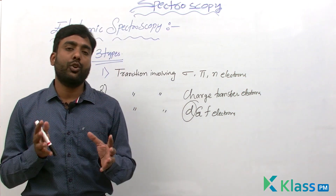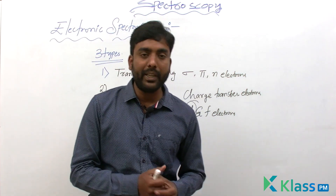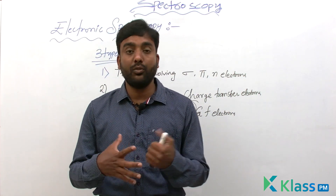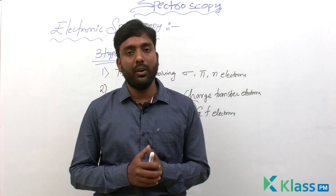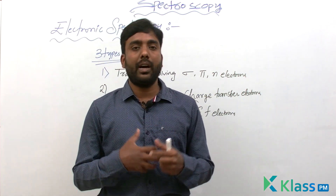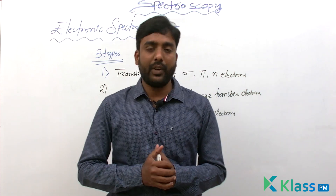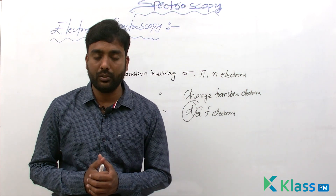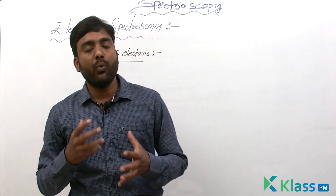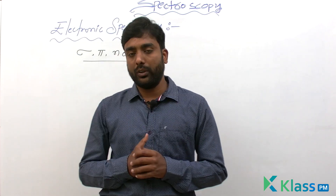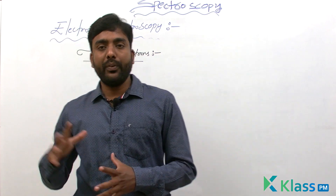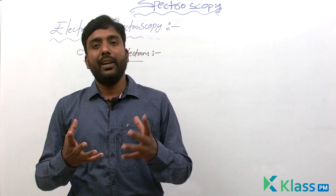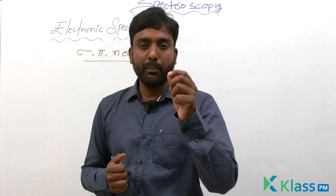So there are three types of electron transitions in electronic spectroscopy: transition involving sigma, pi, and n (non-bonding) electrons; transition involving charge transfer electrons; and transition involving D and F electrons. First we will study the transition involving sigma, pi, and n electrons. Before that, let us briefly study molecular orbital theory.